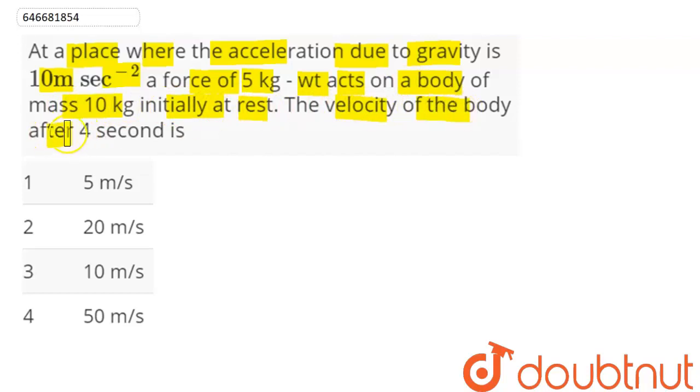The velocity of the body after 4 seconds is what we need to find. The body is initially at rest. The force acting here is of magnitude 5 kg weight on a body of mass 10 kg. Mass of the body is 10 kg and acceleration due to gravity g is 10 meter per second square.